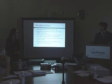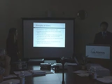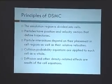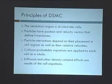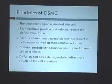In DSMC, we divide our simulation region into many different regions called cells, and each of these cells will contain particles that have both a velocity and a position vector, and these will define the particle trajectories. However, unlike other modeling methods, collisions are performed based on cell position and relative velocity instead of whether the trajectories cross. So we apply collision probability equations to an entire cell, and from that we will be able to see diffusion and other density-related effects.